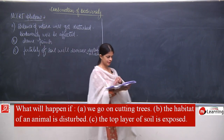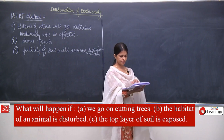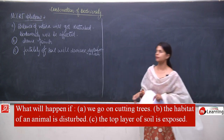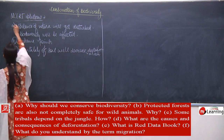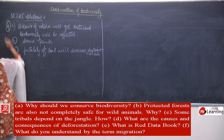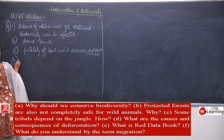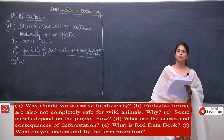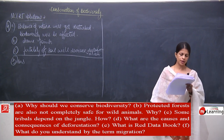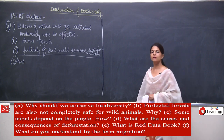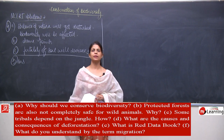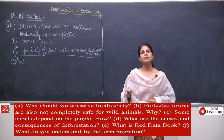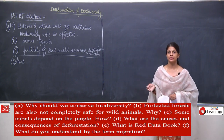This was answer number four and now we will discuss answer number five. Question five asks: why should we conserve biodiversity? Biodiversity means all forms of life which exist on the surface of the earth — the variety of plants and animals.